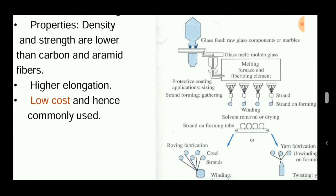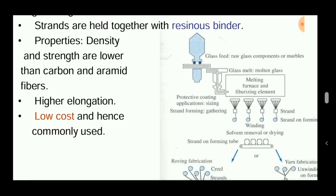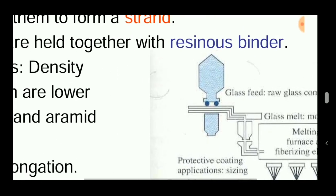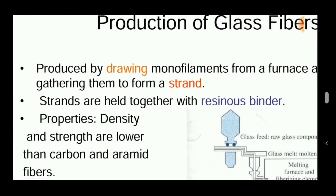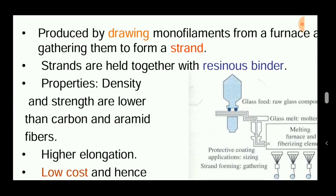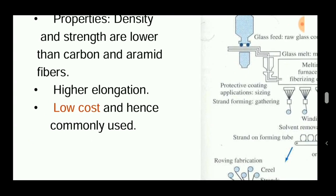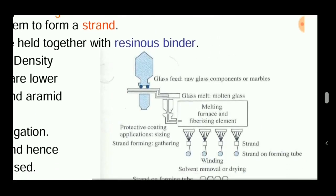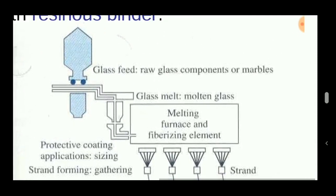The production of glass fibers involves drawing monofilaments from a furnace. Raw glass material is placed into the furnace, where it forms molten glass and is drawn into monofilaments, then gathered to form a strand. These strands are held together with a resinous binder. The properties obtained include high density, high strength, and higher elongation.